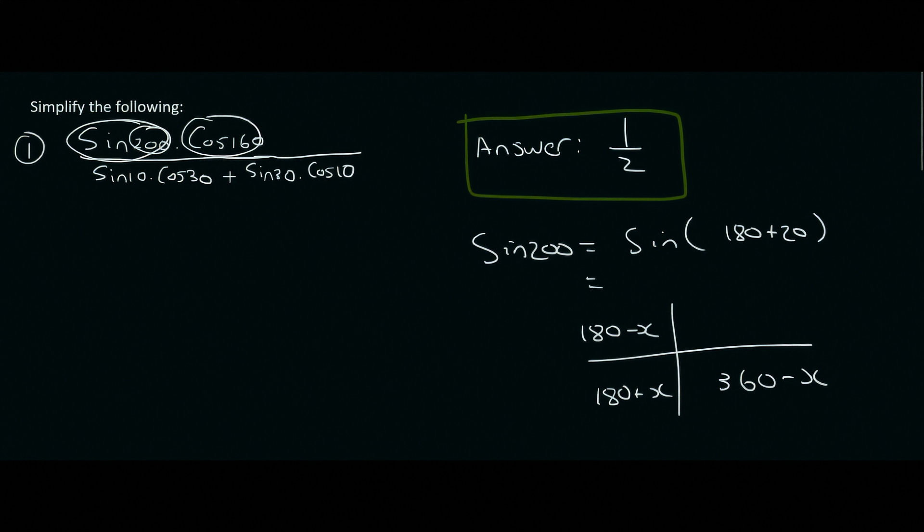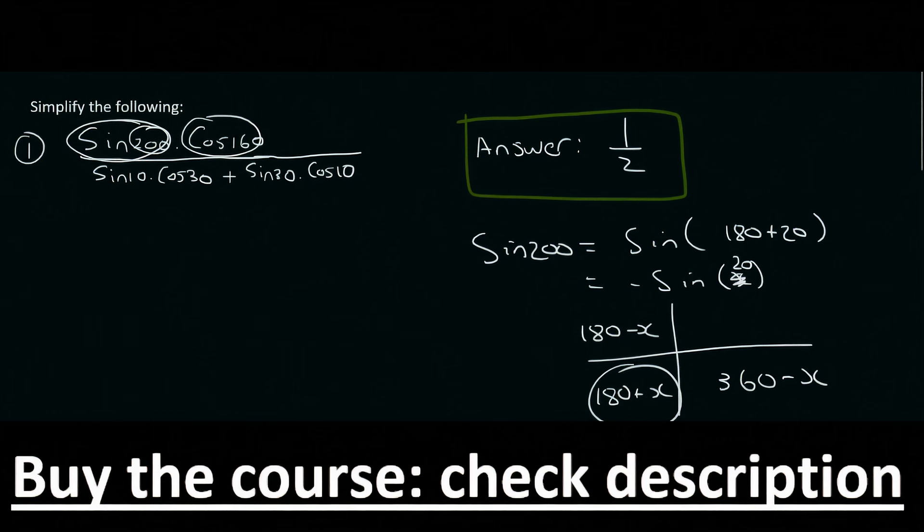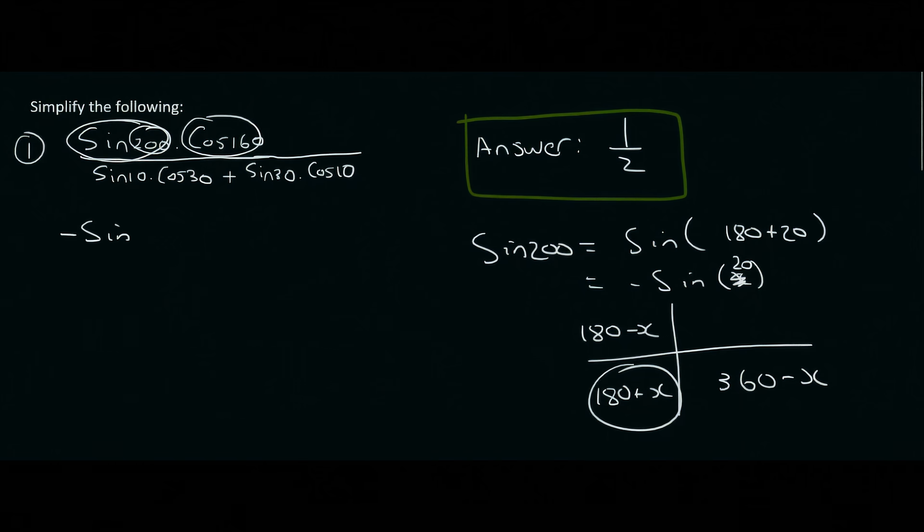Because we know from grade 11 knowledge that the sin of 180 plus anything is just the negative sin of that thing. Sorry, 20. Why do I say negative? Because sin is negative in that quadrant. So sin of 200 is just the same as the negative of sin 20.